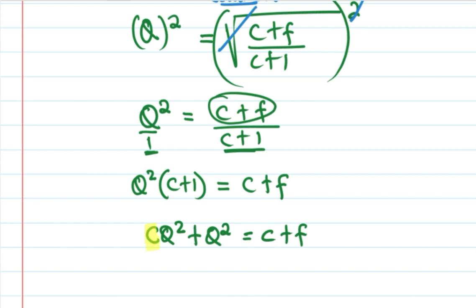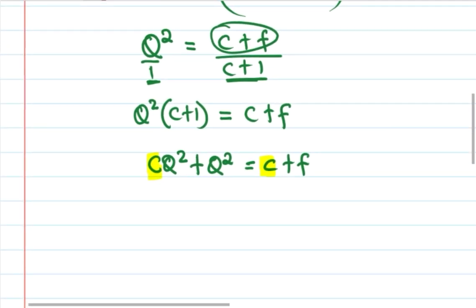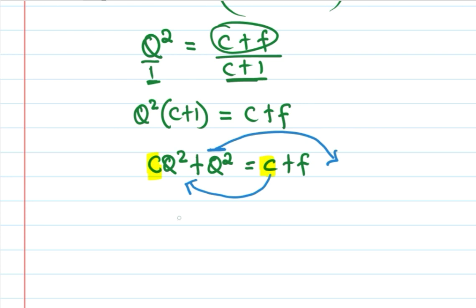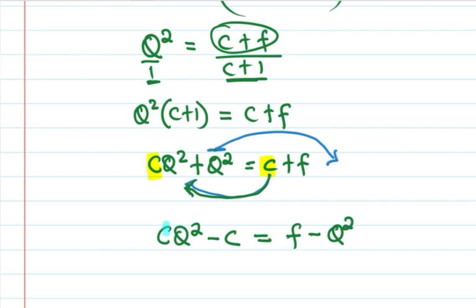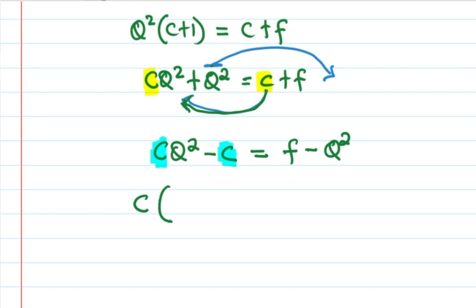Our mission is to make C the subject of the formula. So I will combine the C terms. I will take the C terms to one side: C times Q squared minus C is equal to F minus Q squared. We can now factor out C, giving C times (Q squared minus 1) equals F minus Q squared.